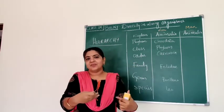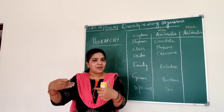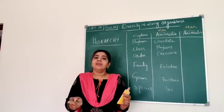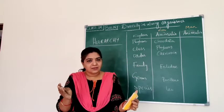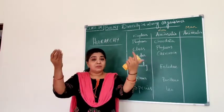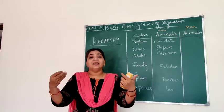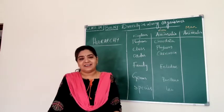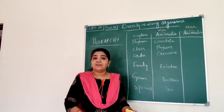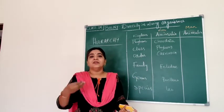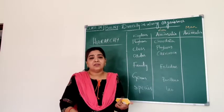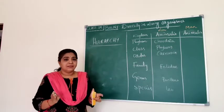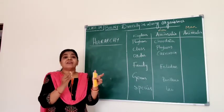In the living world, we also have levels of classification. These are the seven levels of classification: kingdom, phylum, class, order, family, genus, and species. So in the living world, we follow this hierarchy of classification, and when we identify an organism, we have to place it in the appropriate level.